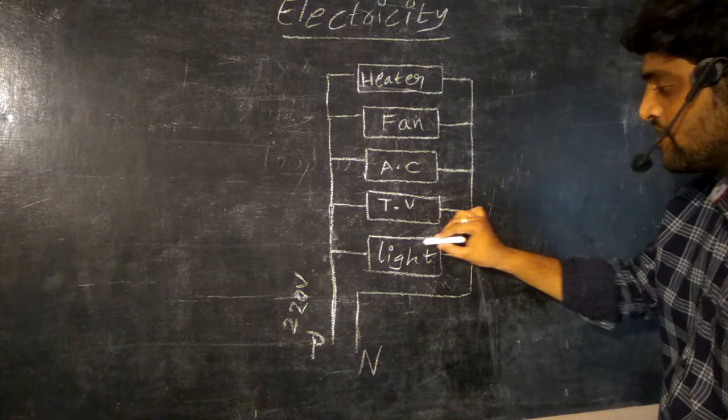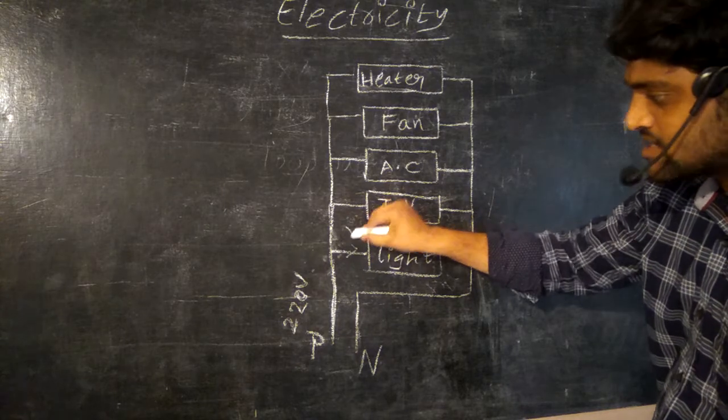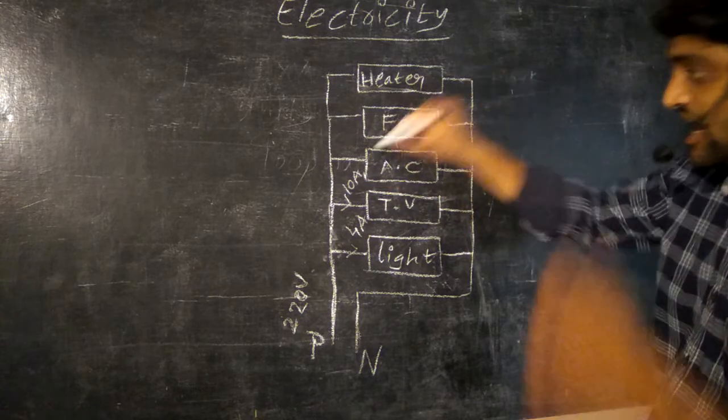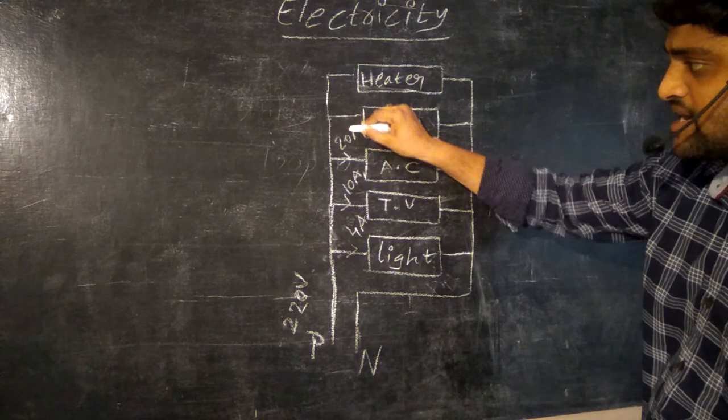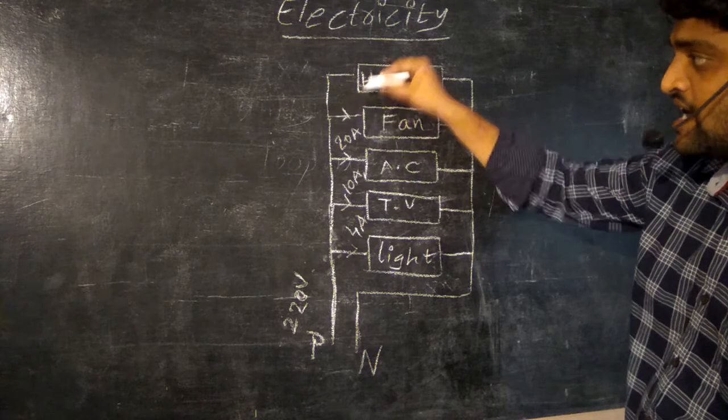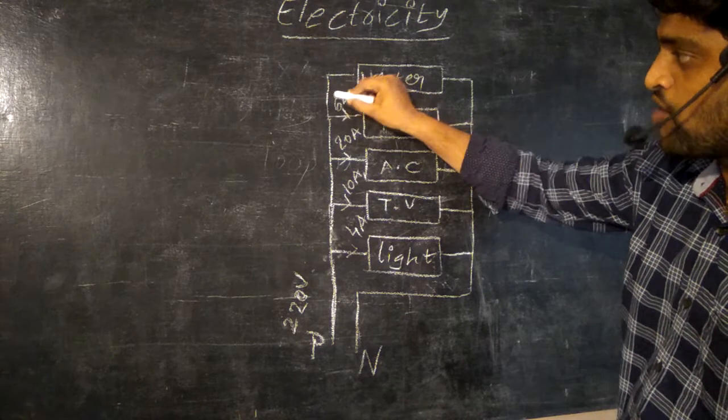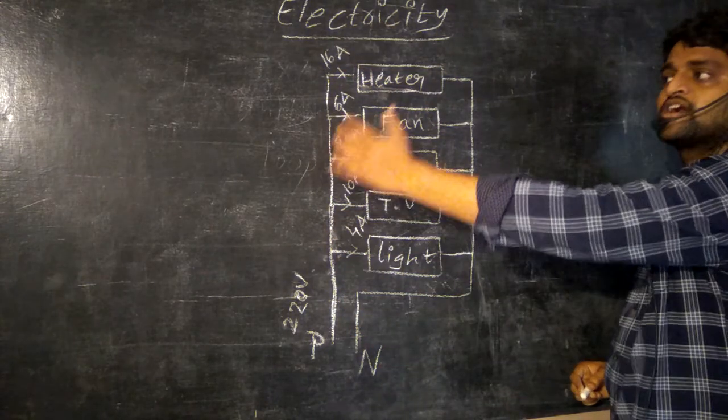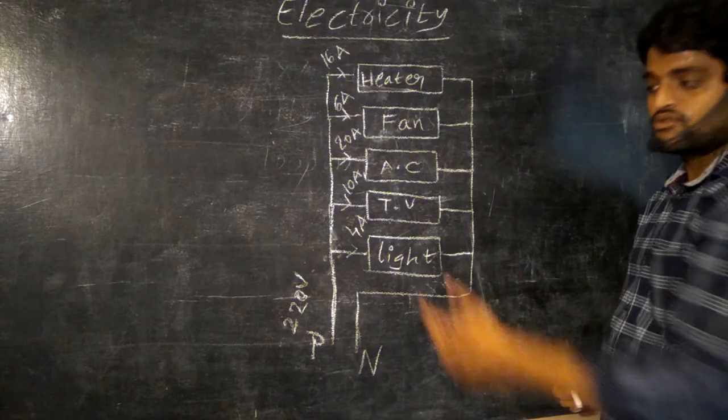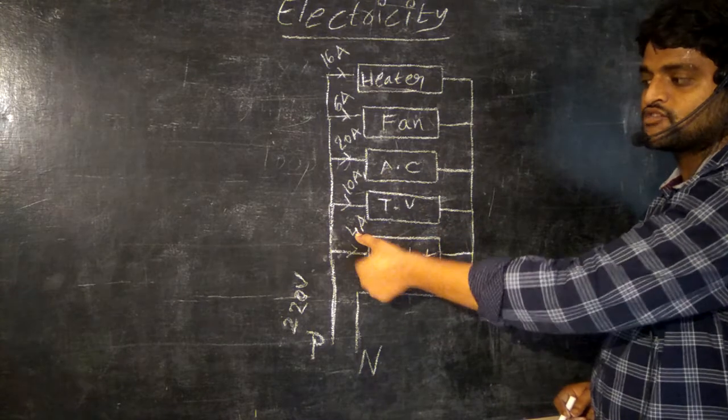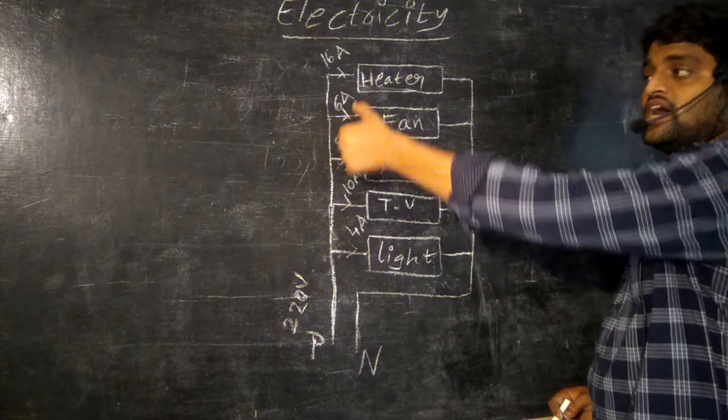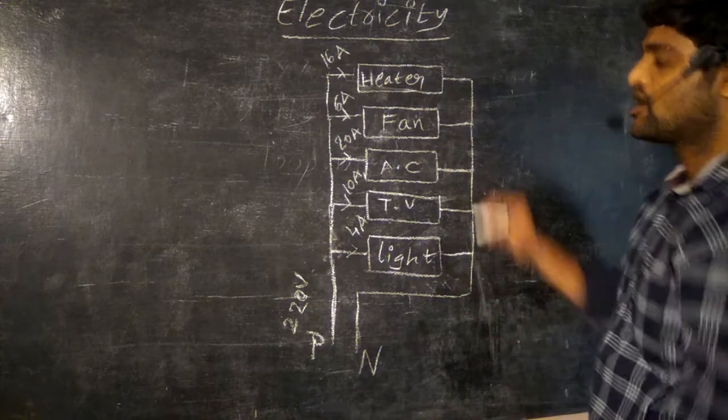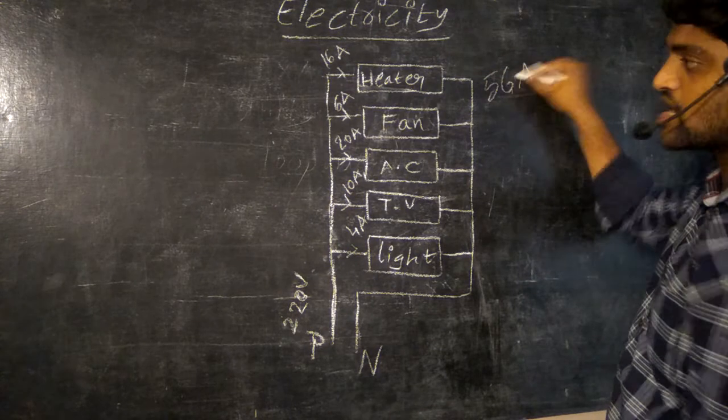For suppose, light can work with current of 4 amperes. TV works with 10 amperes, AC with 20 amperes, and fan can be working with 16 amperes. This much amount of current flows through each device. So if I add these currents: 4 plus 10 is 14, plus 20 is 34, plus 6 is 40, plus 16 is 56. Total current is 56 amperes in total household circuit.